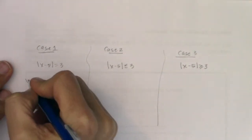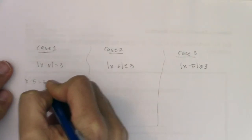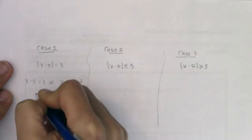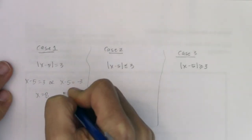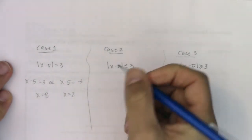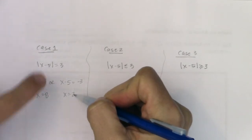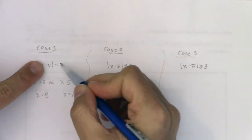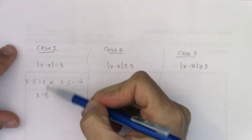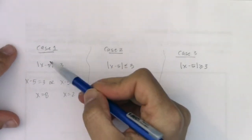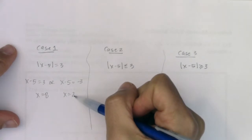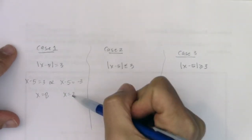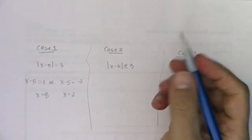For case one, we would set x minus five equal to three, or we would set x minus five equal to negative three. So here I would get eight, and here I would get two. You can see that two is three units away from five — the difference between five and two is three, just like the difference between five and eight is three. Two is to the left of five, eight is to the right of five, but they're both three units away from five, which is why they show up in the solution.